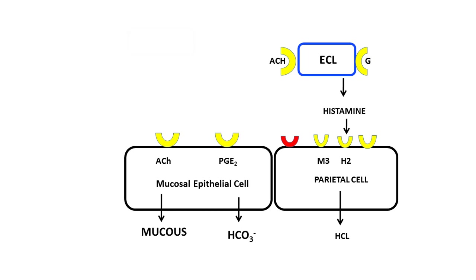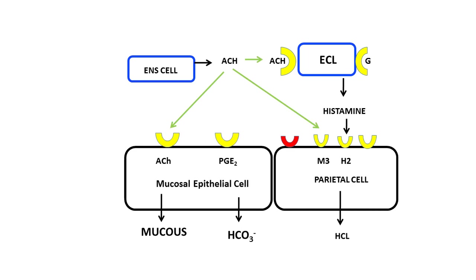The cells of the enteric nervous system secrete acetylcholine. This acetylcholine can bind to acetylcholine receptors present on the mucosal epithelial cell, the parietal cell, and the enterochromaffin-like cell. When acetylcholine binds to its receptor on the mucosal epithelial cell, it causes an increase in bicarbonate production, mucus production, and mucosal blood flow — all beneficial effects that prevent ulcers from forming. However, the predominant effect of acetylcholine is to increase hydrochloric acid production.